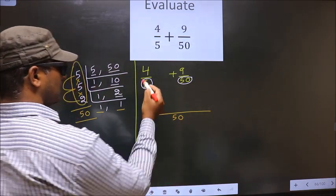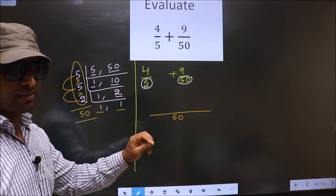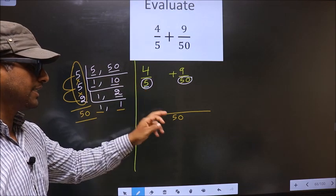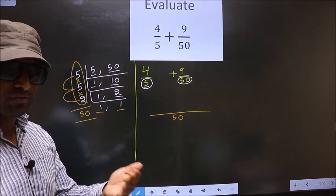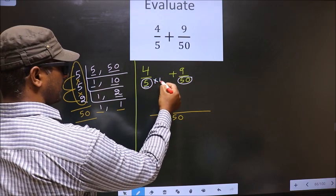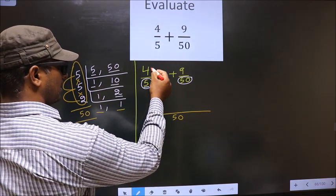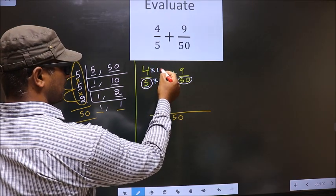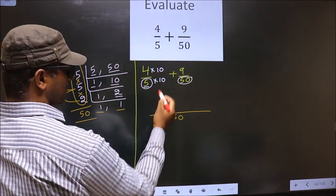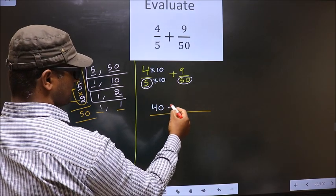Here the denominator is 5. Here we have 50. Now 5 should change to 50. For that to happen we should multiply by 10. Whatever number you are multiplying to the denominator, numerator also you should multiply by the same number. So 4 into 10, 40 plus symbol as it is.